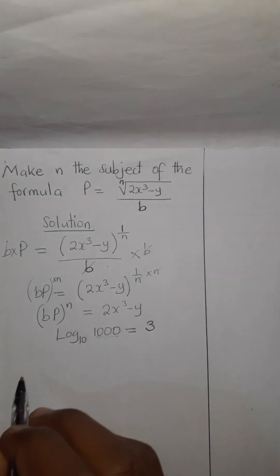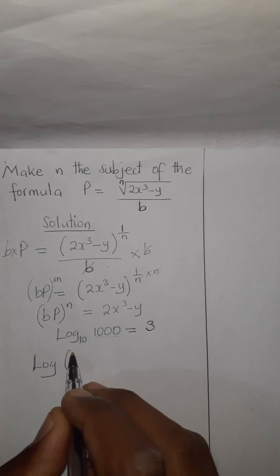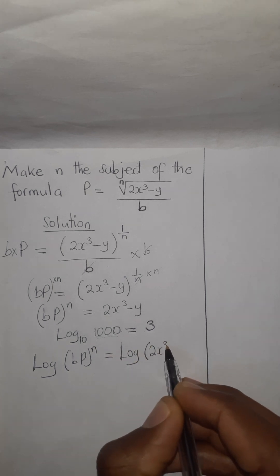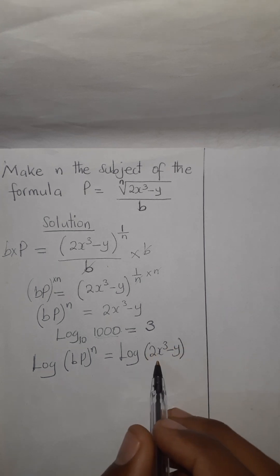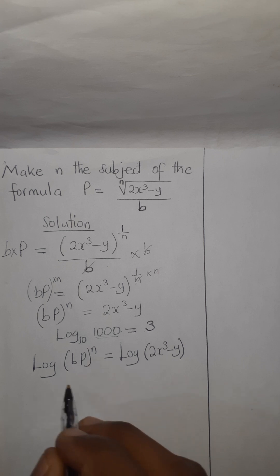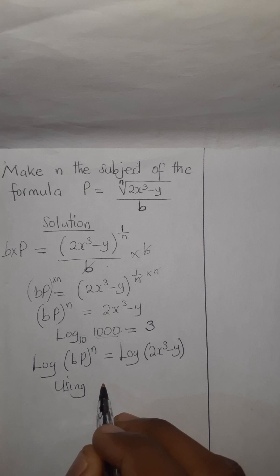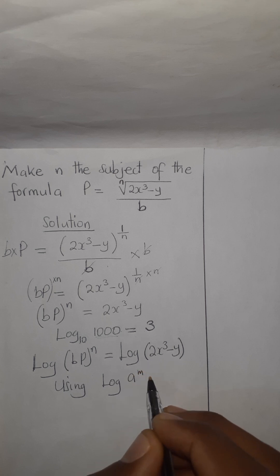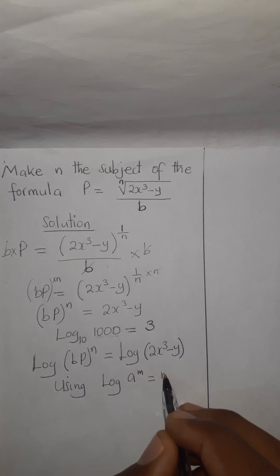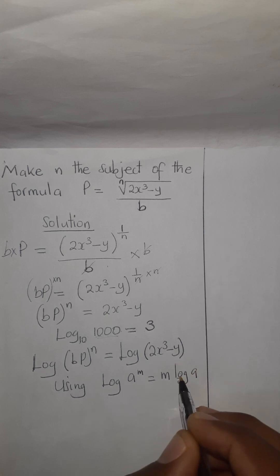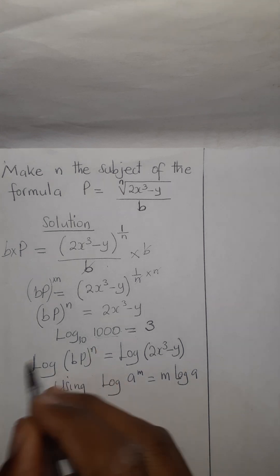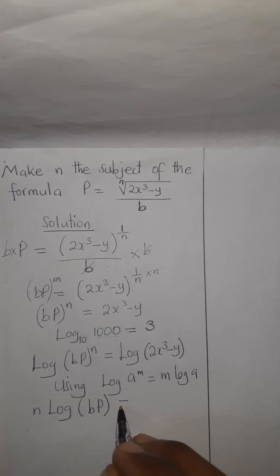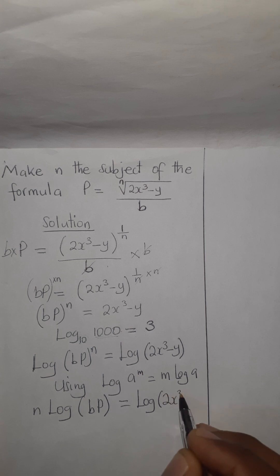So we say: log both sides — log of bp to power n equals log of bracket 2x cubic minus y. Don't forget to put them in brackets. Now, because of the law which says: if we have log of A to power M, this is the same as M log A — we take the power to this side. Using this, we can separate: N log bracket bp equals log bracket 2x cubic minus y.